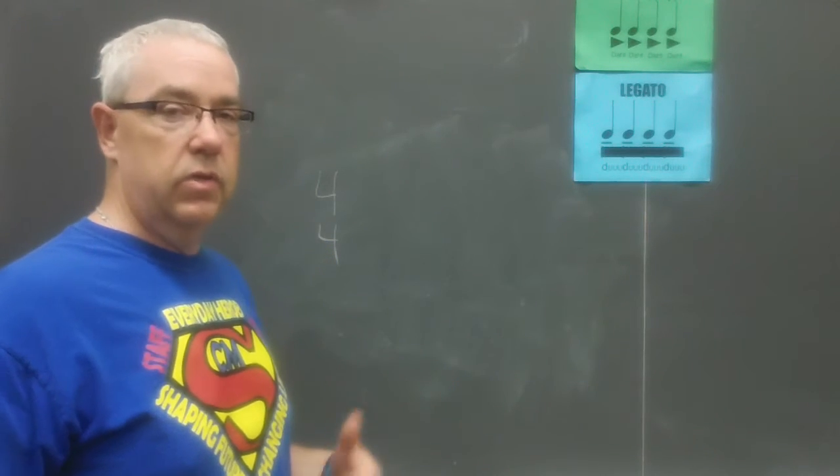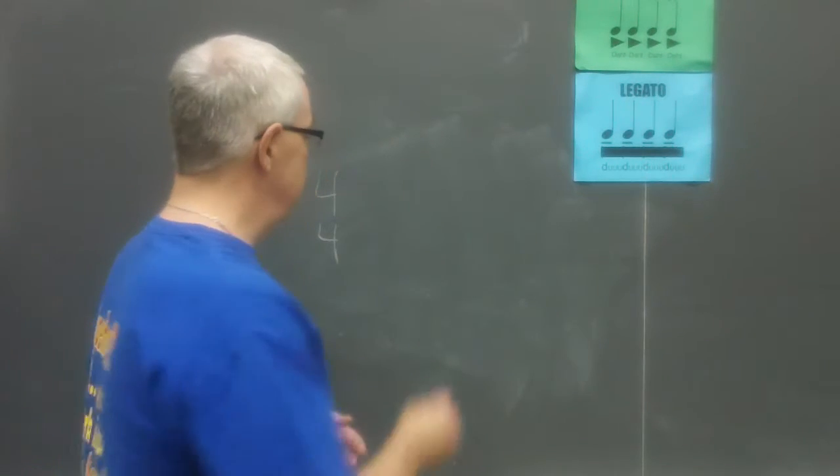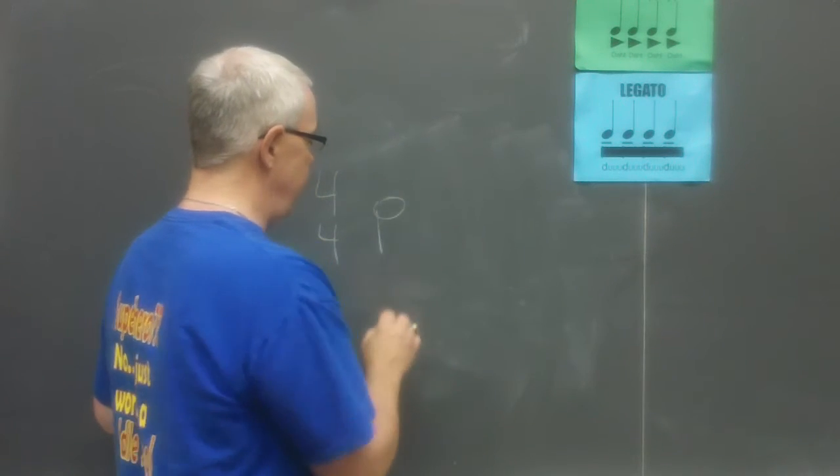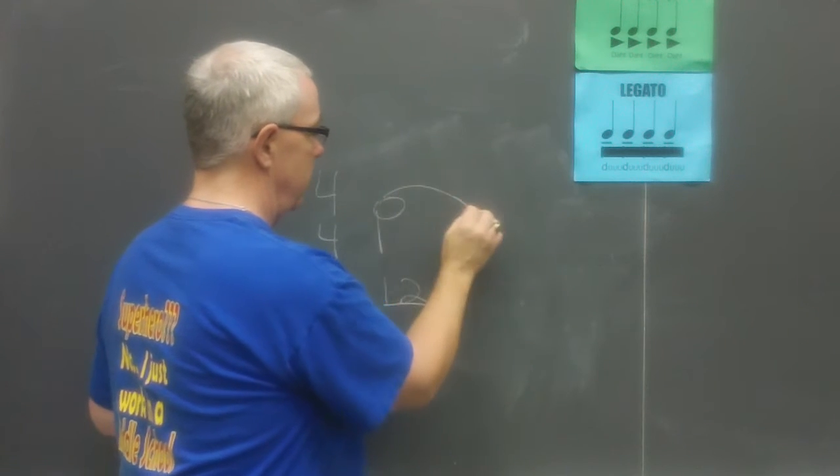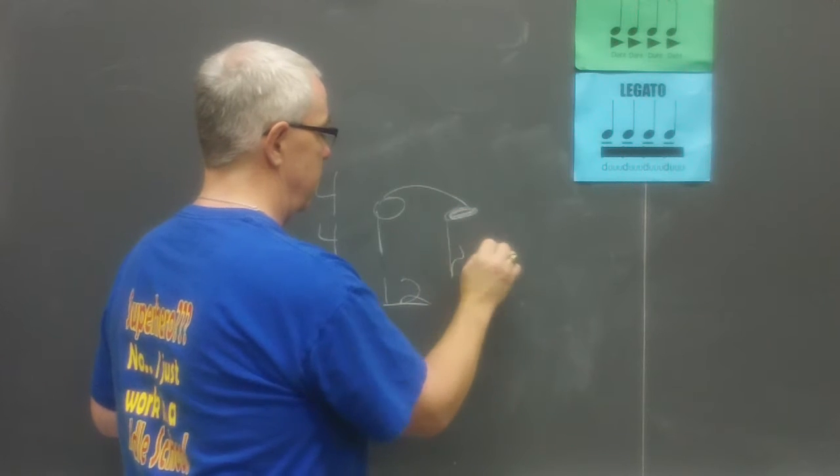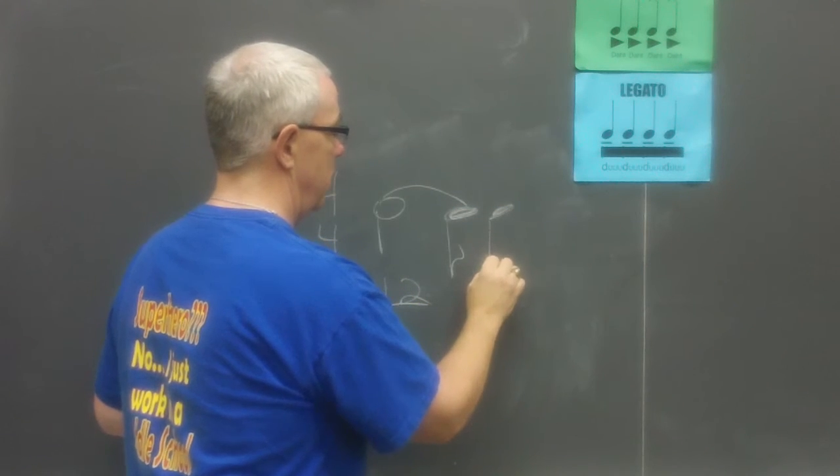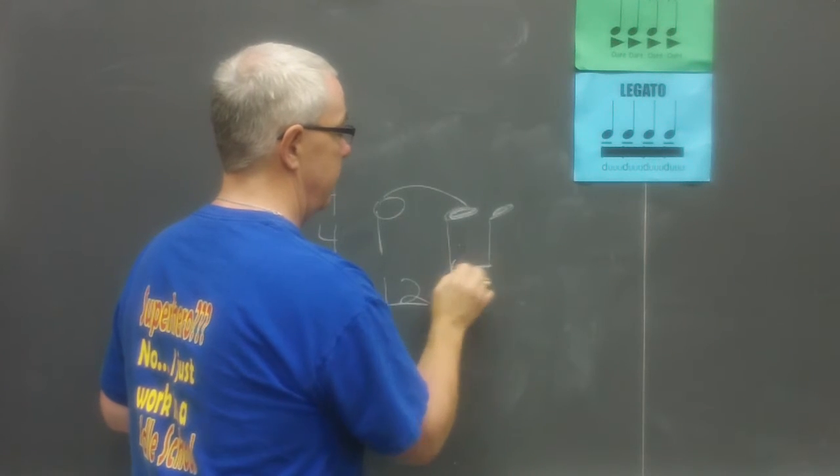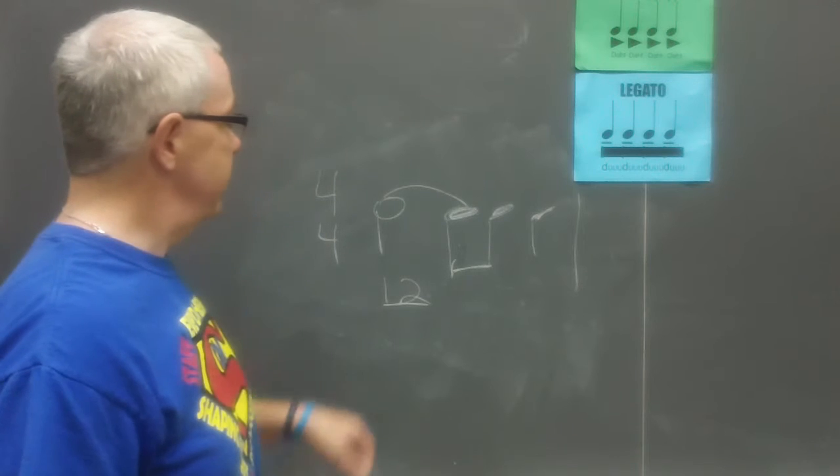Okay, so those are examples where the tied note at the end is a full beat value, like a quarter note in four four. It's a little trickier when we start to deal with partial beats, eighth notes, half beats. So let's start with our same half note, one, two, but this time we're going to tie it to an eighth note followed by another eighth note.